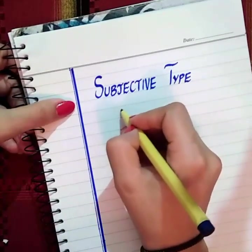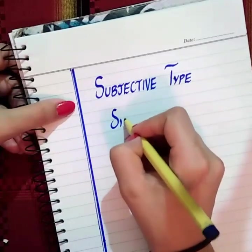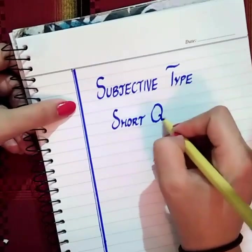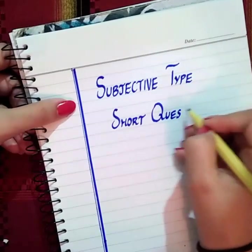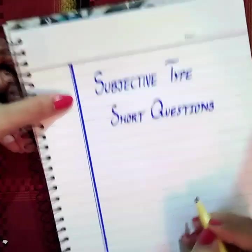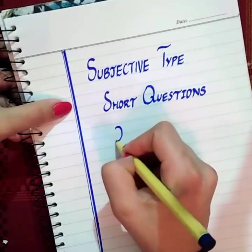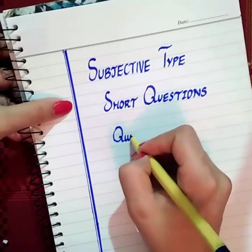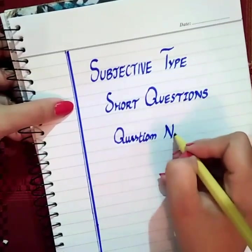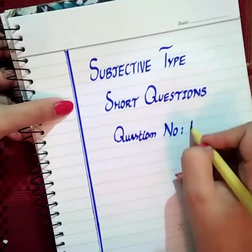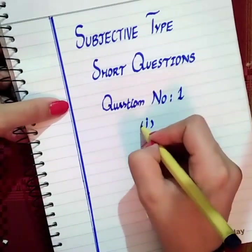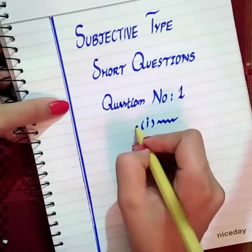Now for the short questions, write question number one, then just put the number below. Put a bracket and make some kind of simple design. We should not take much time on this.